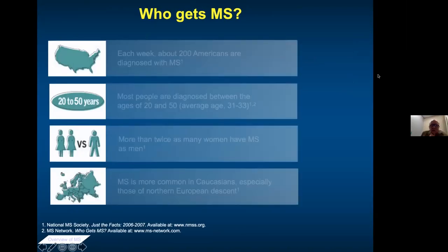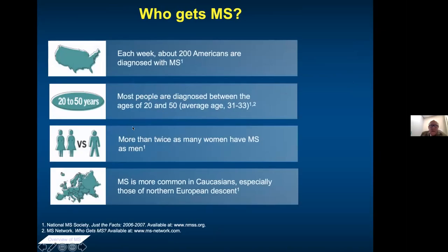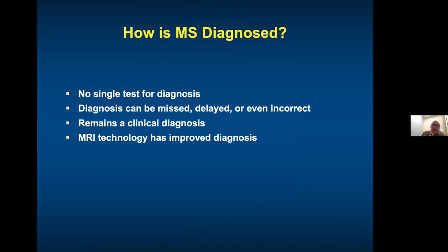Who gets MS? It's age 20 to 50, and probably three times as many women as men develop MS. Interestingly, at the turn of the 1890s, it was men over women. My theory is that women went into the workforce and were exposed more to the environment, and they probably started having babies later. It's more common in Caucasians, but it's present throughout the entire world in all ethnicities. How is the diagnosis made? There's no single test — it can be delayed, and about 20% of patients who come to MS clinics don't have MS. It remains a clinical diagnosis, and MRI has really revolutionized it.